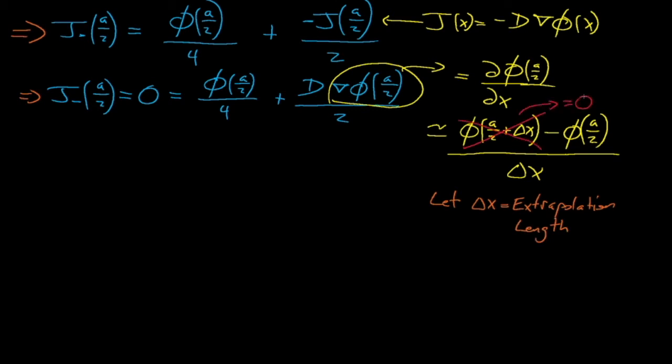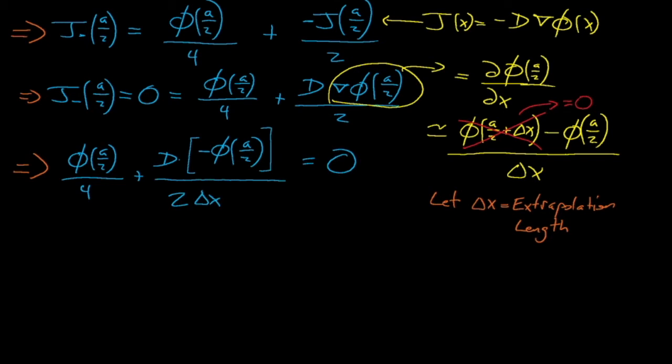If we assume that this delta x equals the extrapolation length, then we know that the first term, which is just the flux at the extrapolation length, must equal zero, and so our equation for the incoming current only depends on phi at the system's boundary, the extrapolation length, and the diffusion coefficient. We can cancel out the phi term, and after solving for delta x, we find that the extrapolation length must equal 2 times the diffusion coefficient. This is a very useful expression since the extrapolation length does not depend on the system's flux at all. It only depends on D.